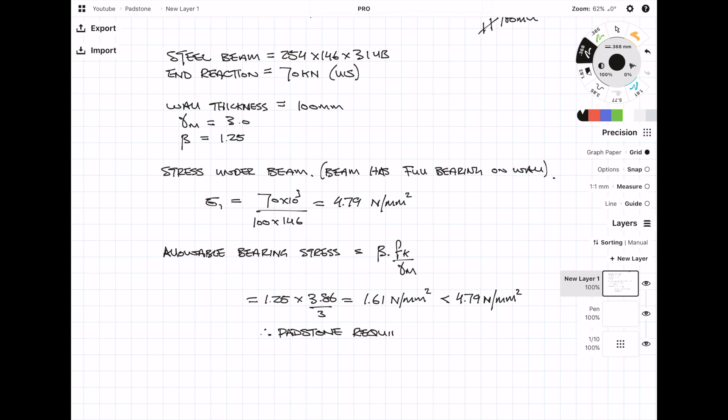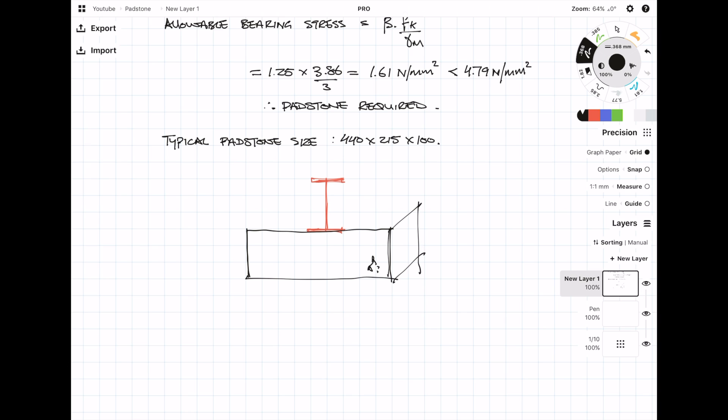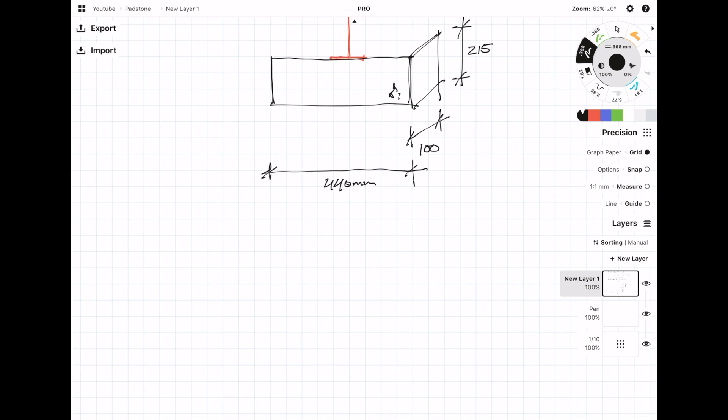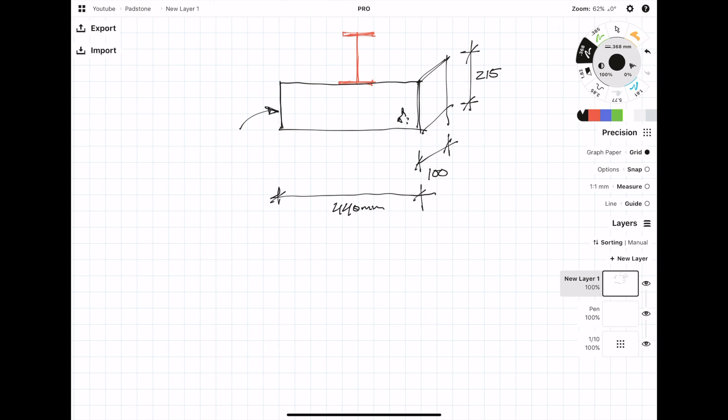Padstones can be cast in situ or bought with set dimensions. Because buying a padstone from a shop is much quicker and more cost effective than casting one in situ, I'm going to check my design with a standard padstone size that typically coincides with a normal block. Padstones can be bought using different concrete grades. In this example we're going to try a C20 concrete grade.